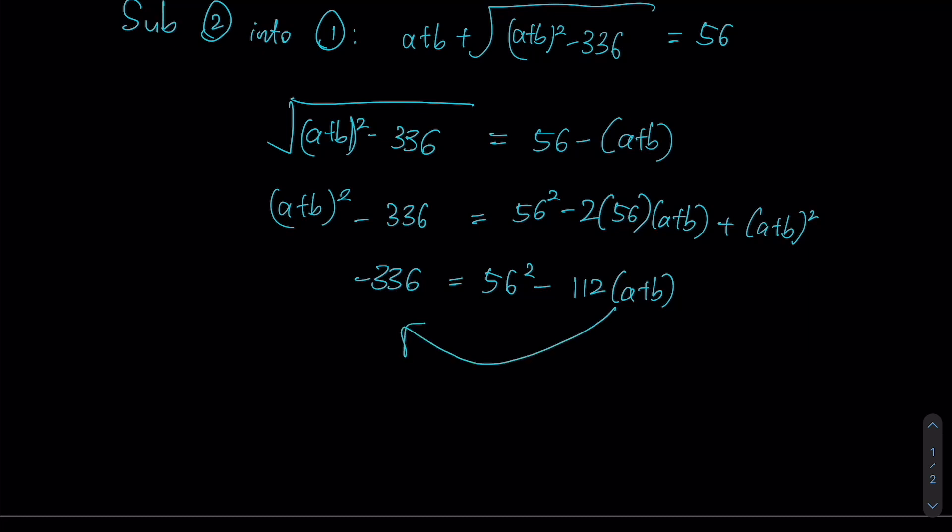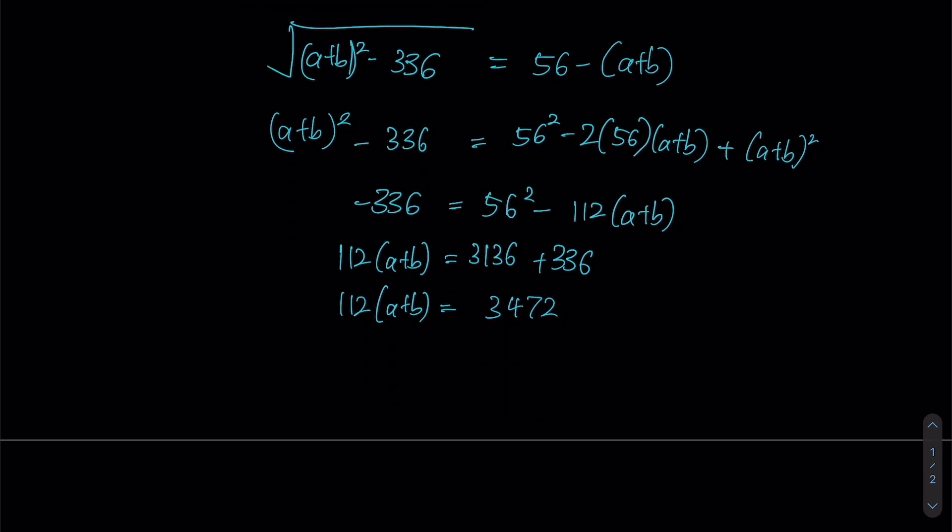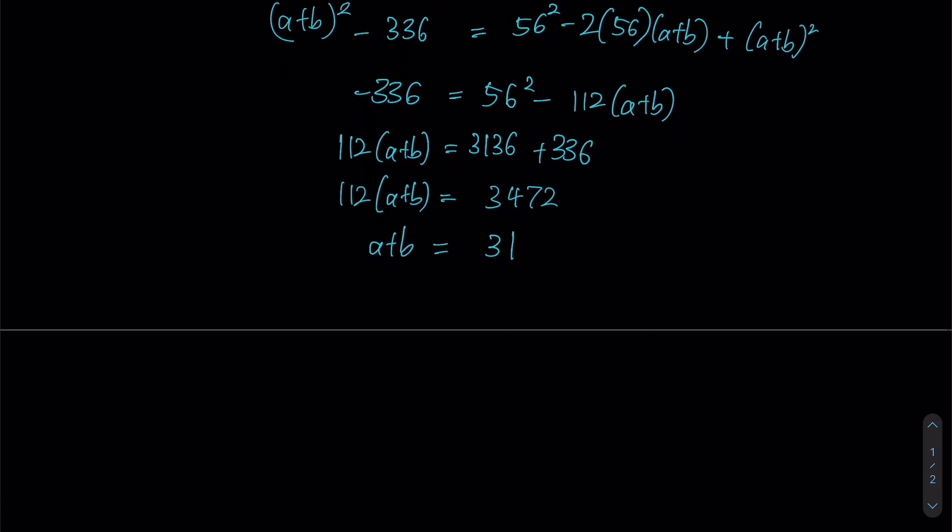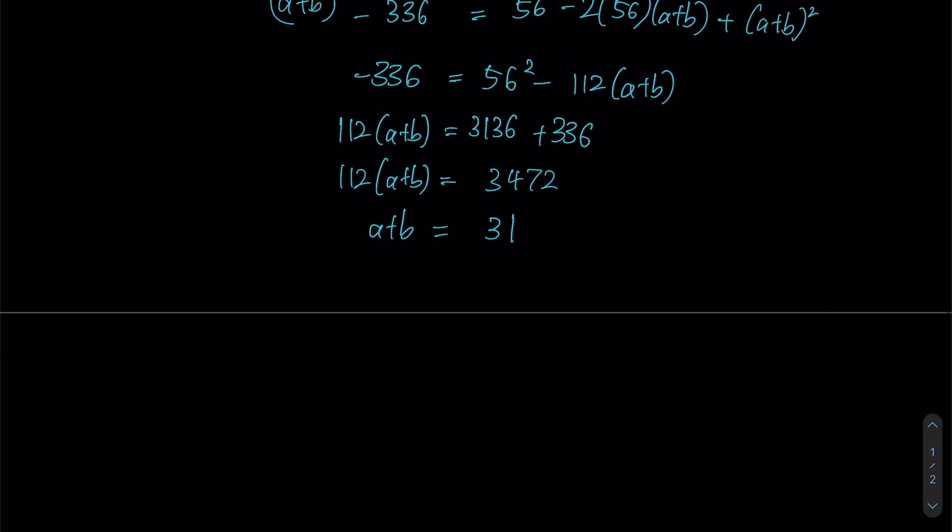We'll shift our A plus B to the left and our constants to the right, leaving us with this equation. 56 squared can actually, if you evaluate what it is, you'll get 3136. And then if we add both of these terms together, we shall get 3472. Taking 3472 and dividing it by 112, we'll end up with a value of 31. So now we have a sum of the values of A plus B.